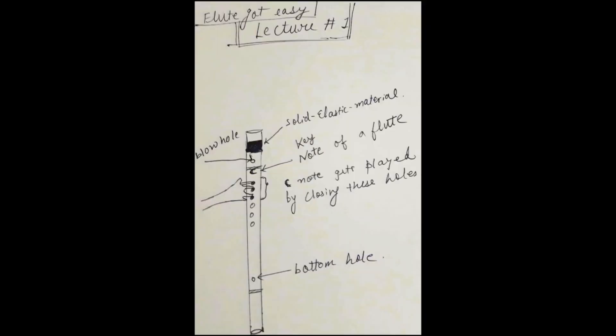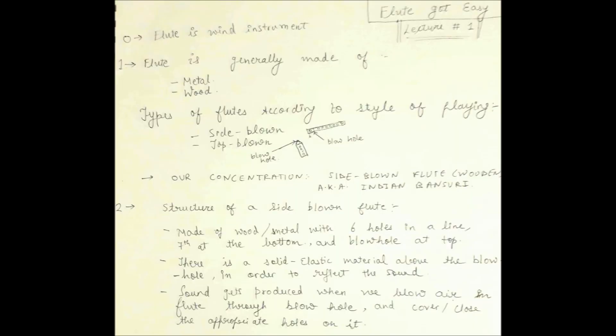Key note is always written on the top of the flute as shown in the figure. It represents the note that will be played if you cover the top three holes and blow the air through the blowhole. Further, we will discuss more about notes of upper and lower octaves in the upcoming tutorial, that is lecture number two.